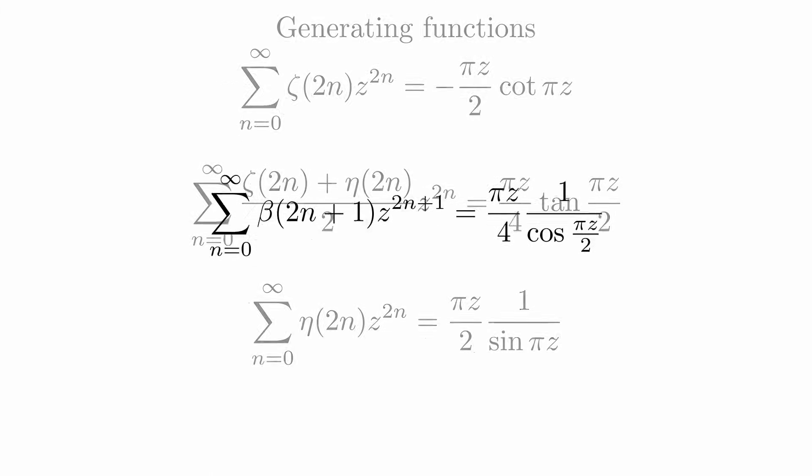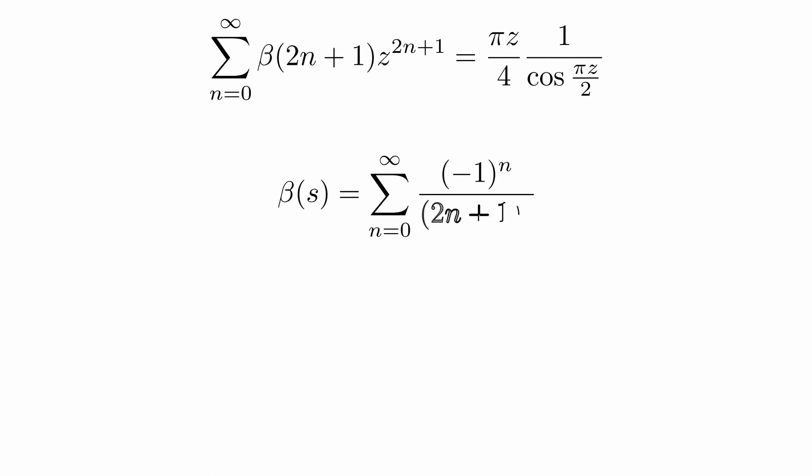Here we have the Dirichlet beta function. This function is defined to bring alternating sums over the odd integers. To find the Taylor series at zero of the right side in this equation, we are going to introduce the Euler numbers.